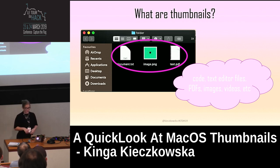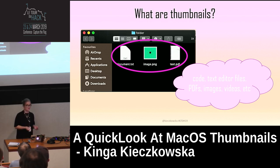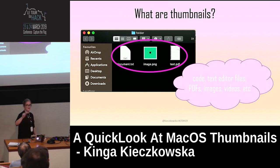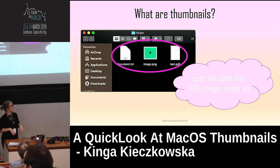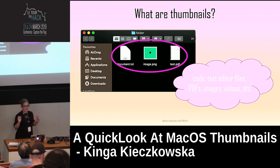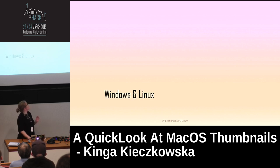In macOS specifically, the mechanism for making these thumbnails is called Quick Look. It's also responsible for that cool feature where you can select a file and press the space bar and get a full preview — for example, if it's a multi-page PDF you can scroll through the pages and read it completely, without actually opening the file. Just before we continue, this talk is only about macOS.